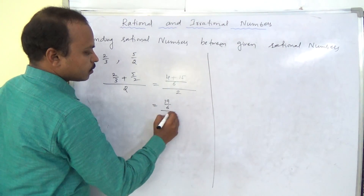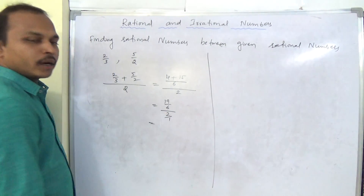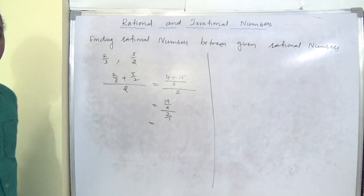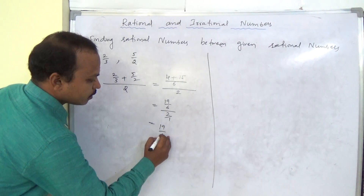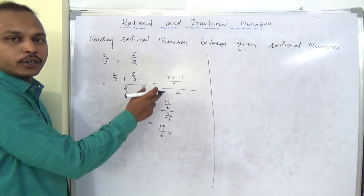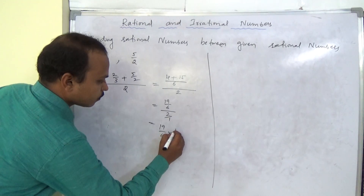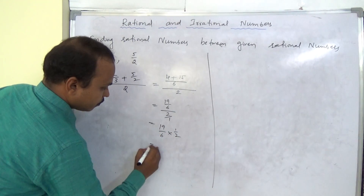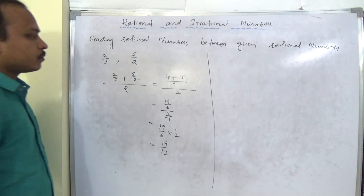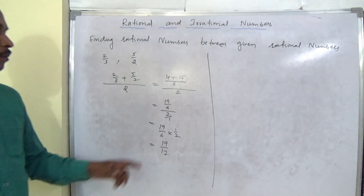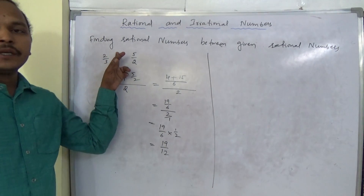We have 19 by 6 divided by 2. Since 2 can be written as 2 by 1, dividing becomes multiplying by the reciprocal, which is 1 by 2. So the result is 19 by 12. Therefore, 19 by 12 is one rational number between 2 by 3 and 5 by 2.